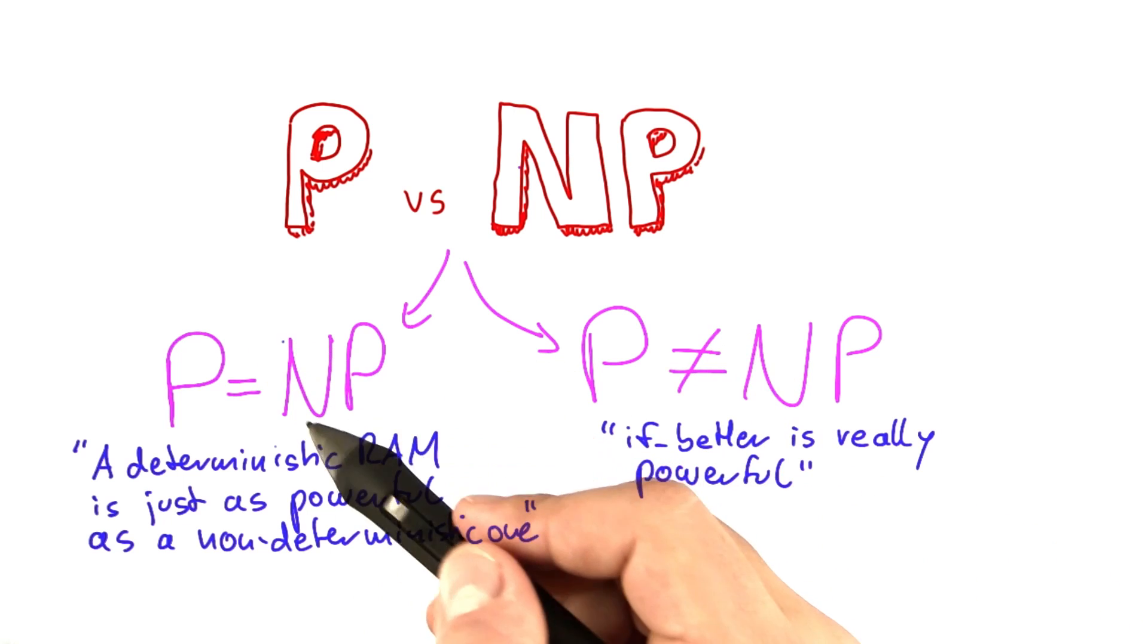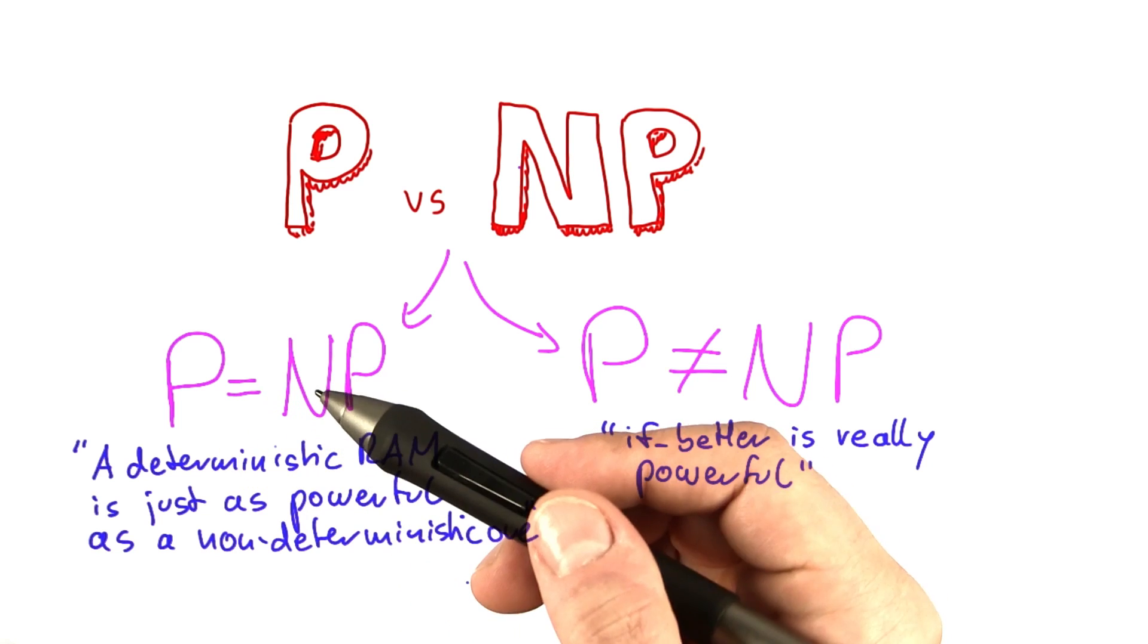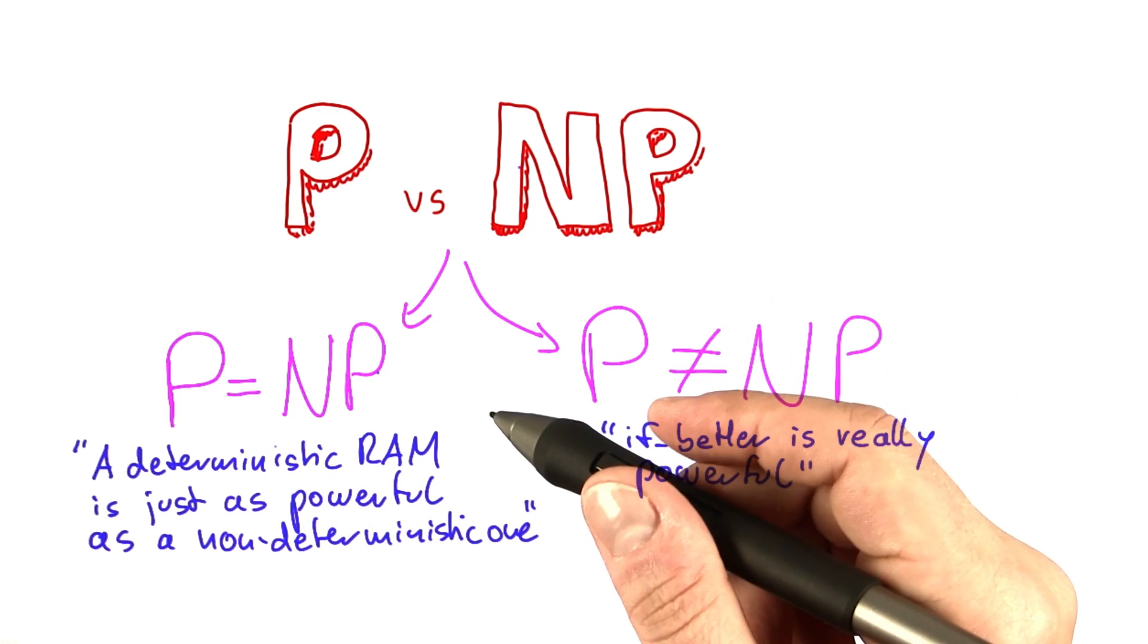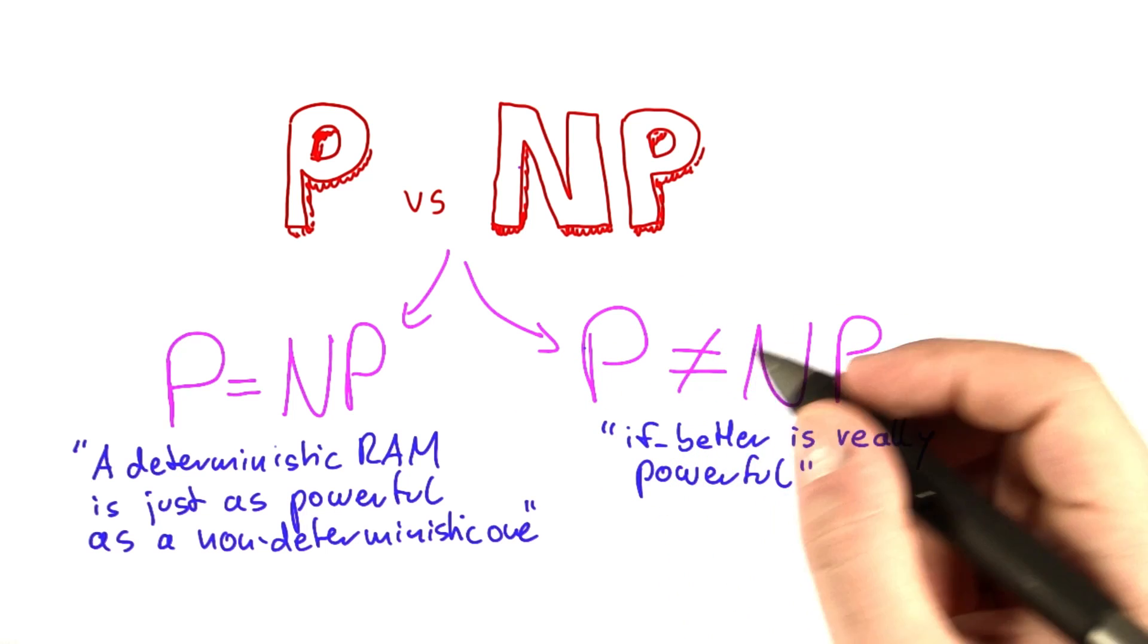On the other hand, nobody has been able to find a polynomial time algorithm for any single NP-complete problem, despite literally thousands of practically relevant NP-complete problems being out there.